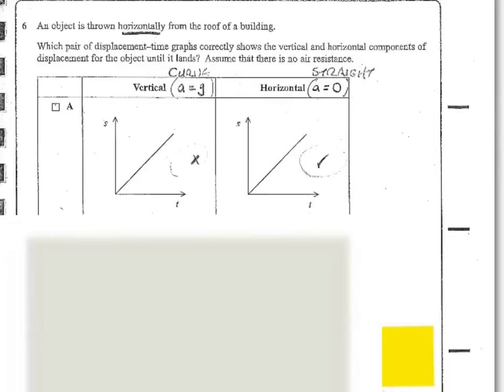Question 6 then. An object is thrown horizontally from the roof of a building. Which pair of displacement time graphs correctly shows the vertical and horizontal components of displacement for the object until it lands? Assume there is no air resistance. So the first thing to remind ourselves of the fact that in the vertical there's an acceleration and in the horizontal there isn't. So in the horizontal direction we would expect it to be covering equal displacements in equal times. So we would expect the graph in the horizontal to be a straight line increasing. Now in the first case that is what it is. We've got a straight line increasing for the horizontal. However we expect a curve on the other one because the displacement will be more each second. So we would expect this to curve up. And it's not doing that. So A is of no use to us. Let's have a look at B. Well B neither of them is doing what we want.